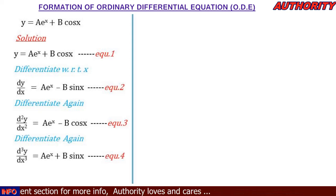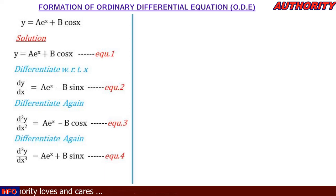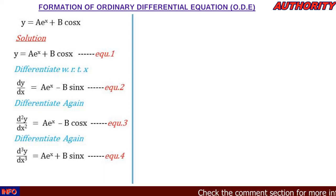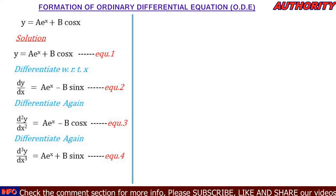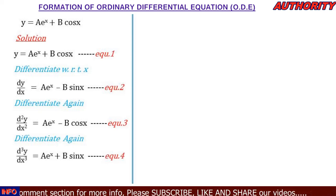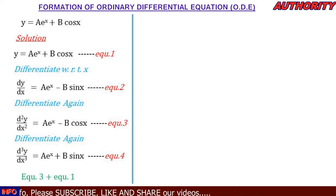We now have equations 1 through 4. Let's look closely at equation 1 and equation 3. Equation 1 says y = ae^x + b·cos(x), and equation 3 says d²y/dx² = ae^x − b·cos(x). These are similar, so what we are going to do is add equation 1 and equation 3 together.